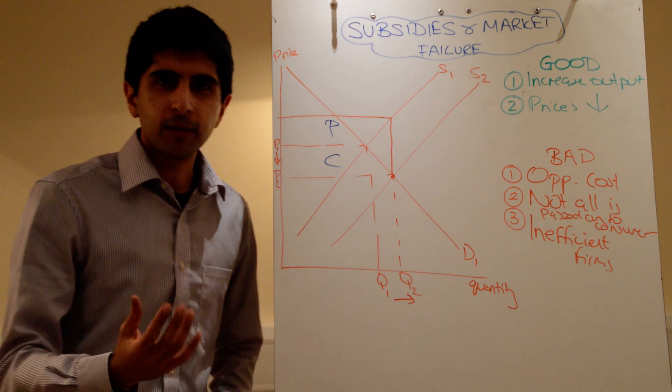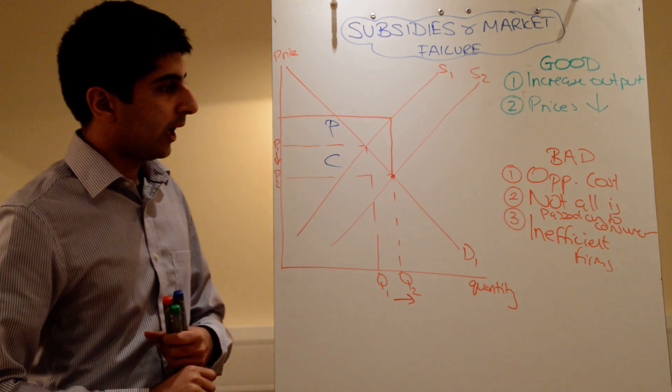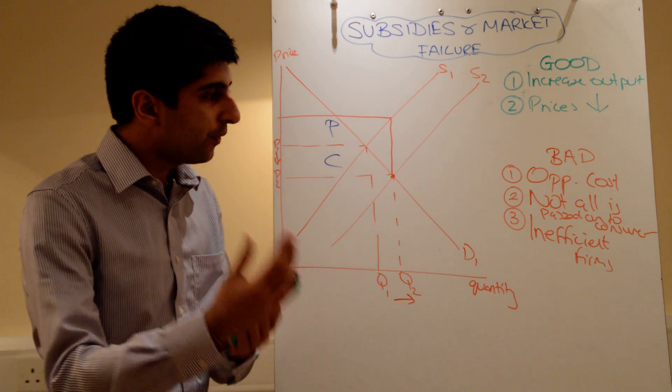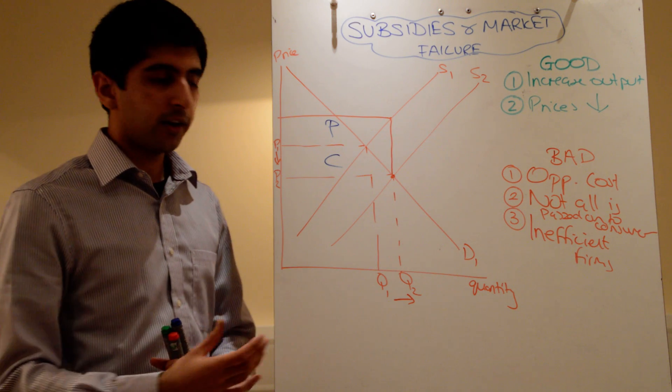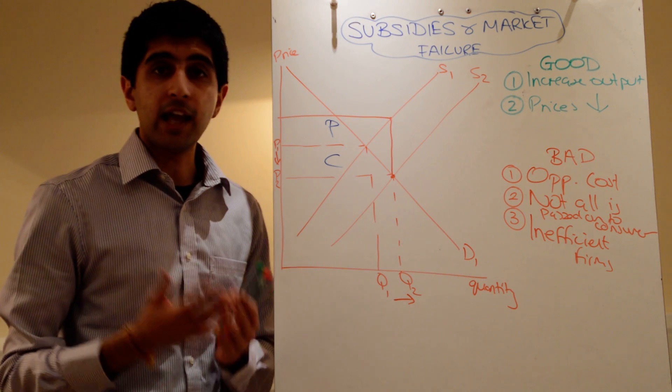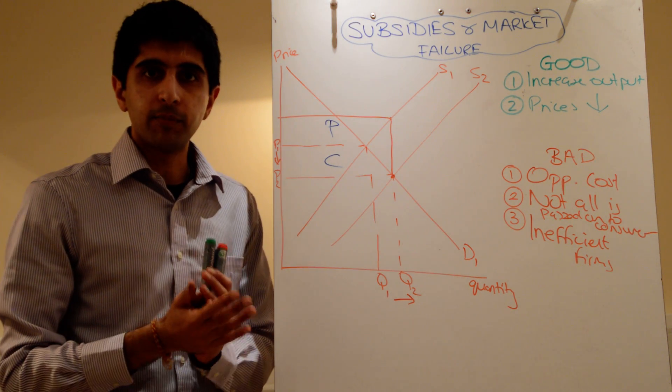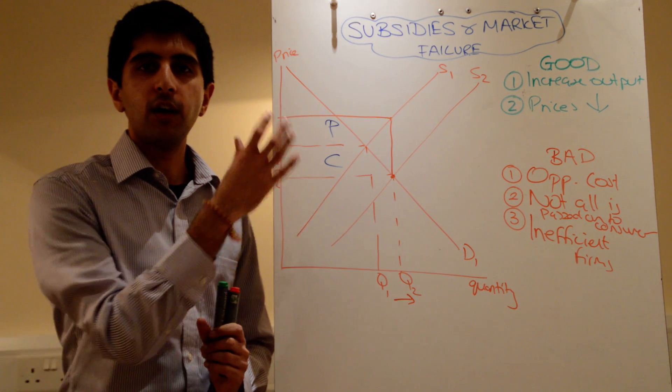And finally, the level of the subsidy too. So, information, the quality of information around for government is important too. So, how much is subsidized? If they over-subsidize, maybe we're going to produce too much of something. If they under-subsidize, maybe the market failure is not going to be solved as efficiently as would be like. So, the level of information available to the government is also going to determine the end result of the subsidy.